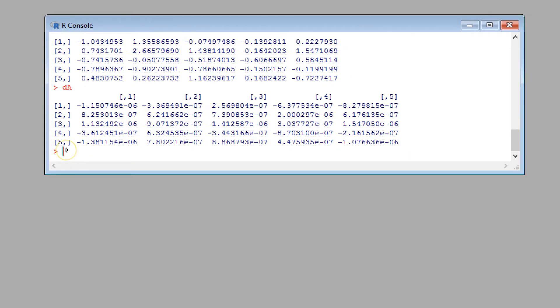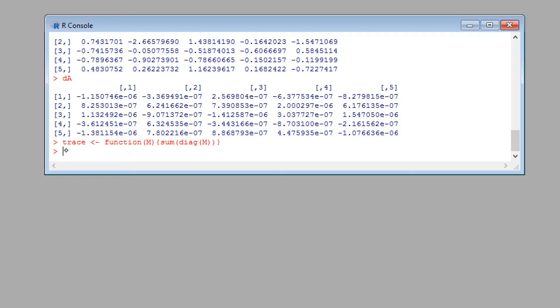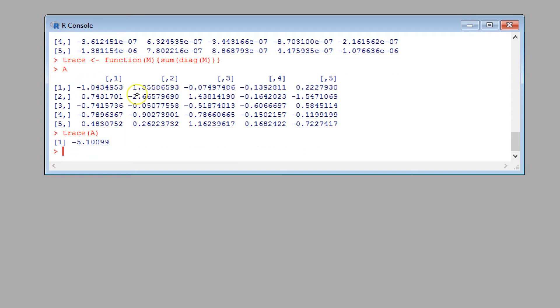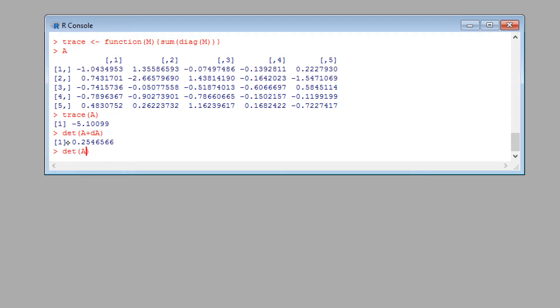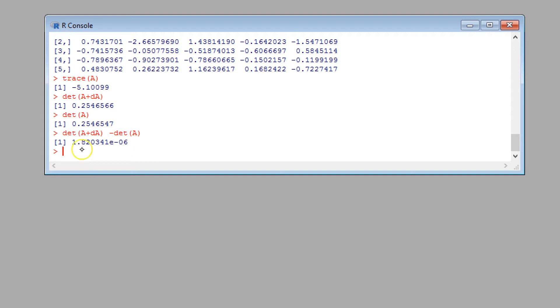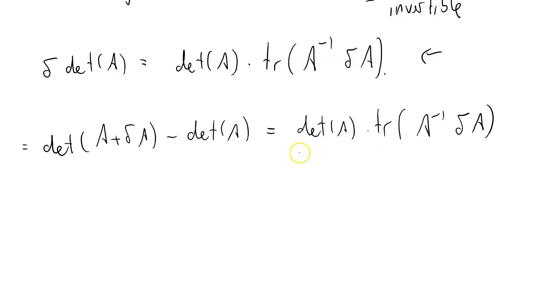So what I mean there is det of A plus delta A minus det of A equals to first order. Determinant of A times the trace of A minus 1 matrix multiplication delta A. Now where's my R window gone? Okay. So let's work out the left-hand side. Oh, actually I need to write a trace function. Trace becomes a function of a matrix which returns the sum of the diagonal elements of M. So we've got matrix A, trace of A. It's just the sum of the diagonal, so it's minus 1 plus minus 2 plus that plus that plus that. It comes out to be minus 5.